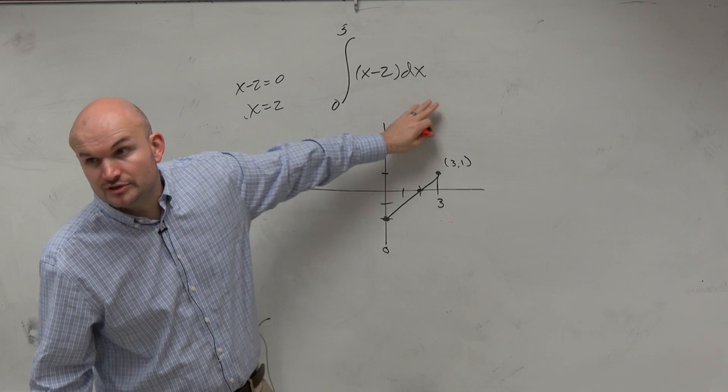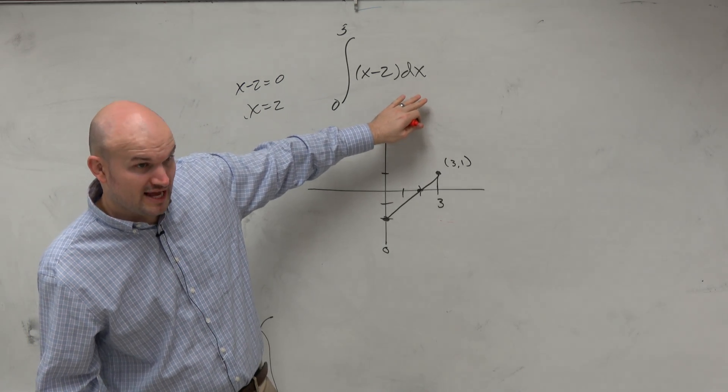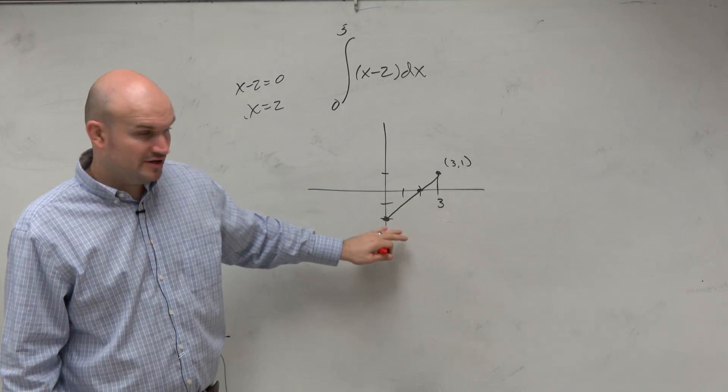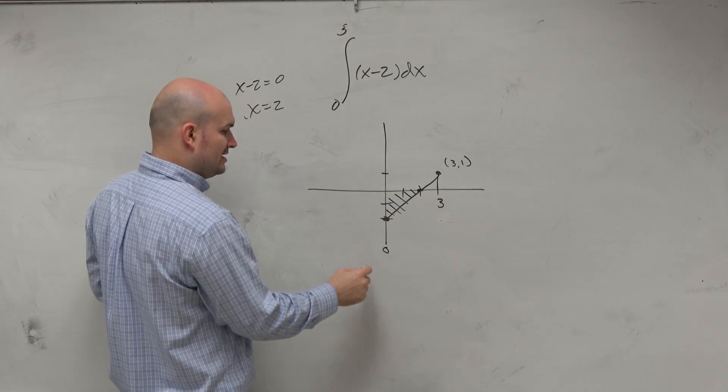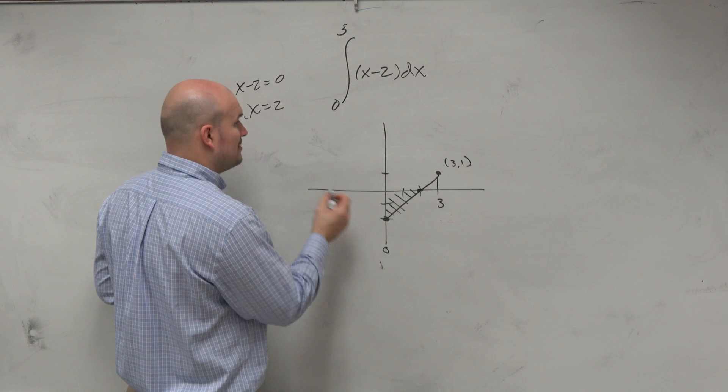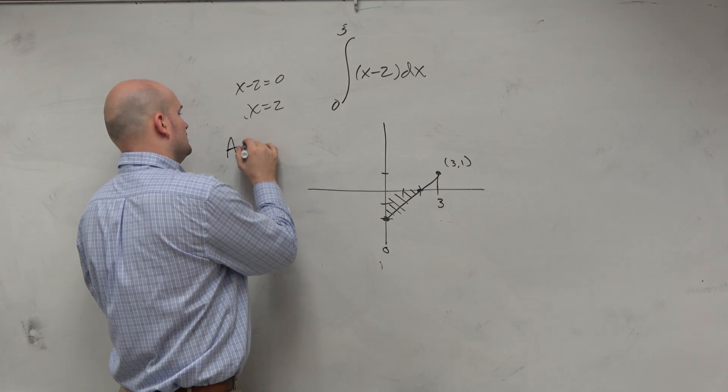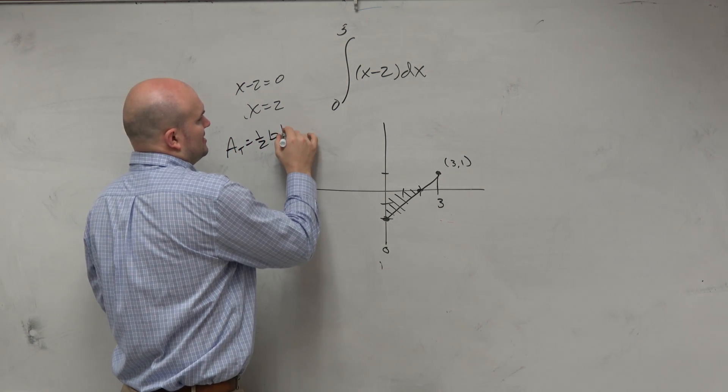So rather than doing the algebra here, let's geometrically figure this out. So we have this area. And that area is going to be, remember, area of a triangle, 1 half base times height. OK?